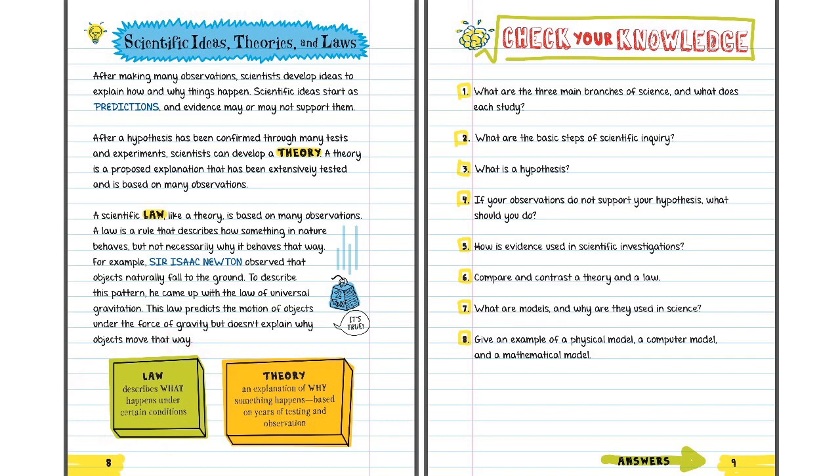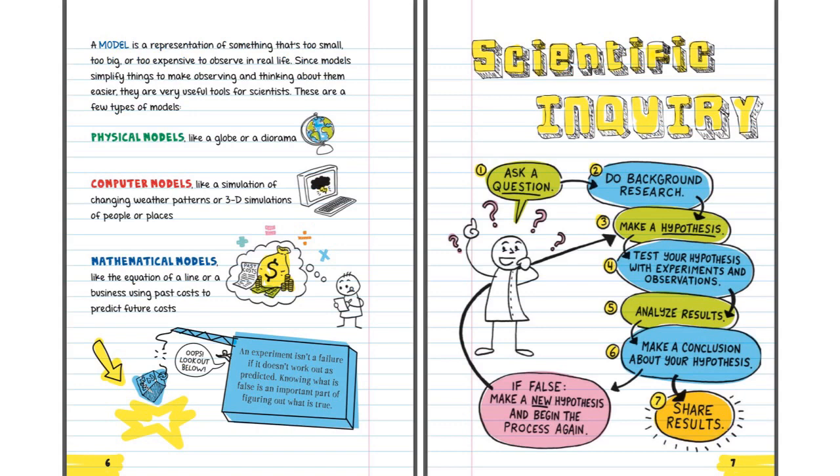Number seven. What are models and why are they used in science? That was back on page six. Here we go. A model is a representation of something that's too small, too big, or too expensive to observe in real life.